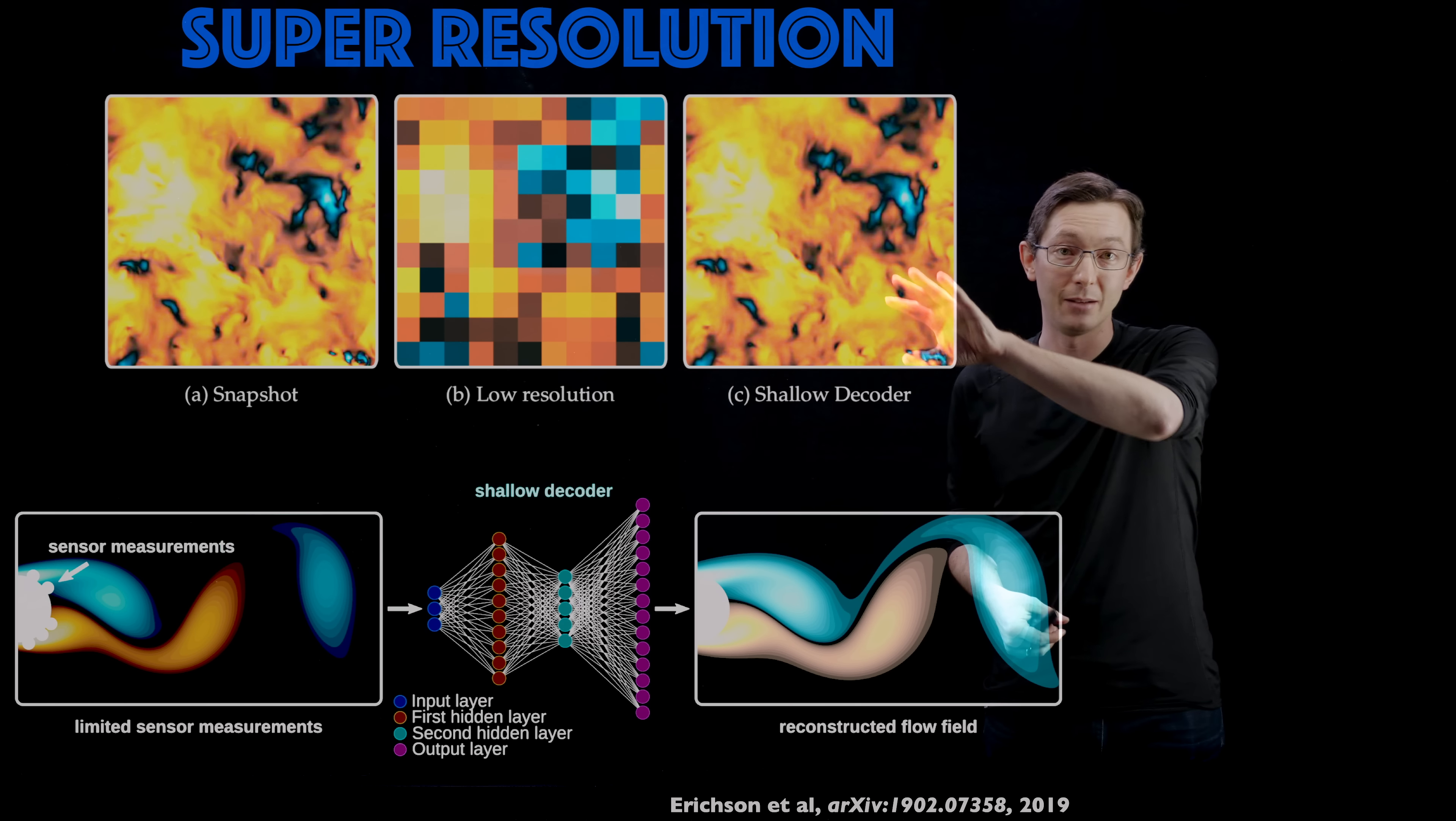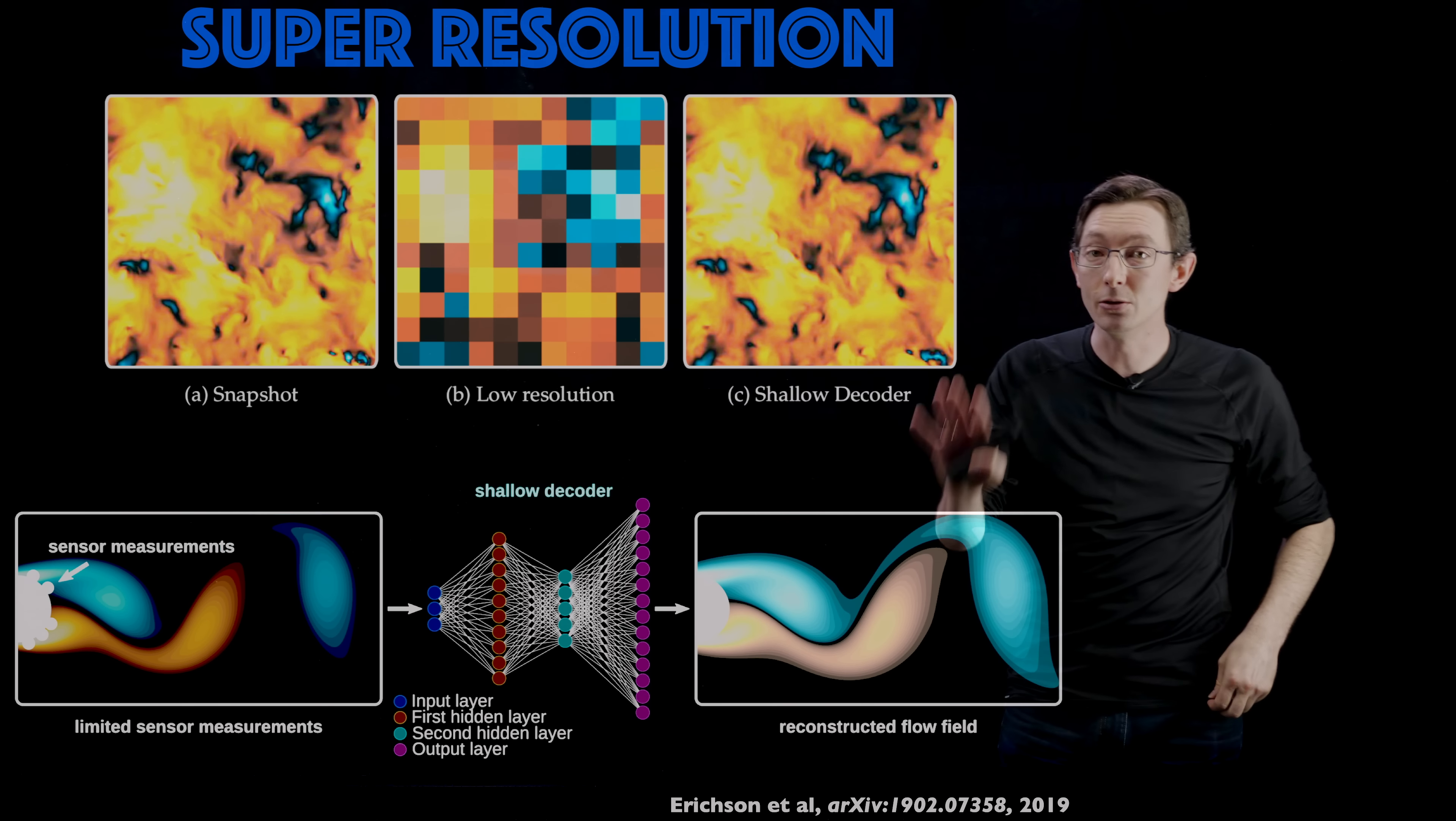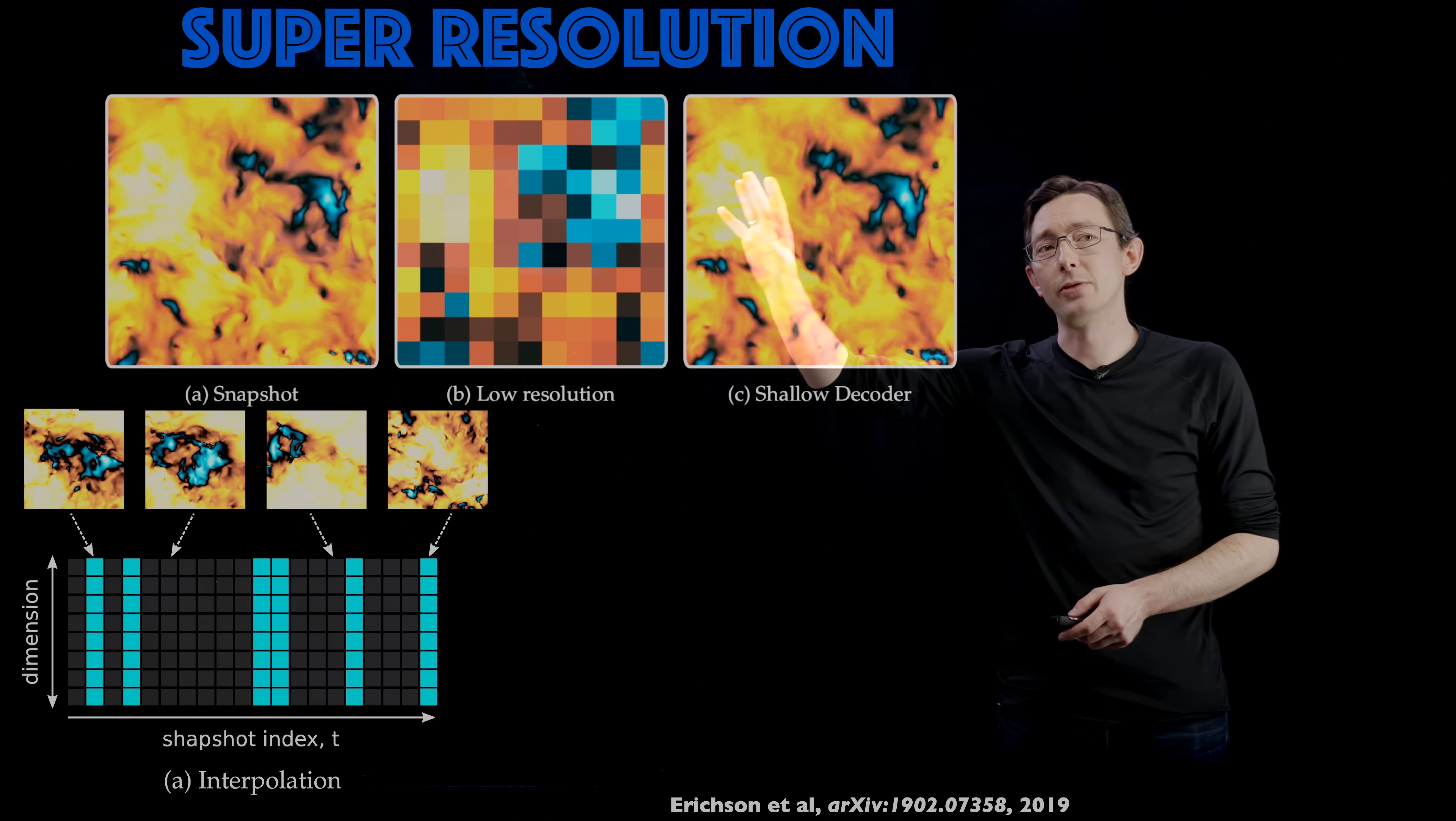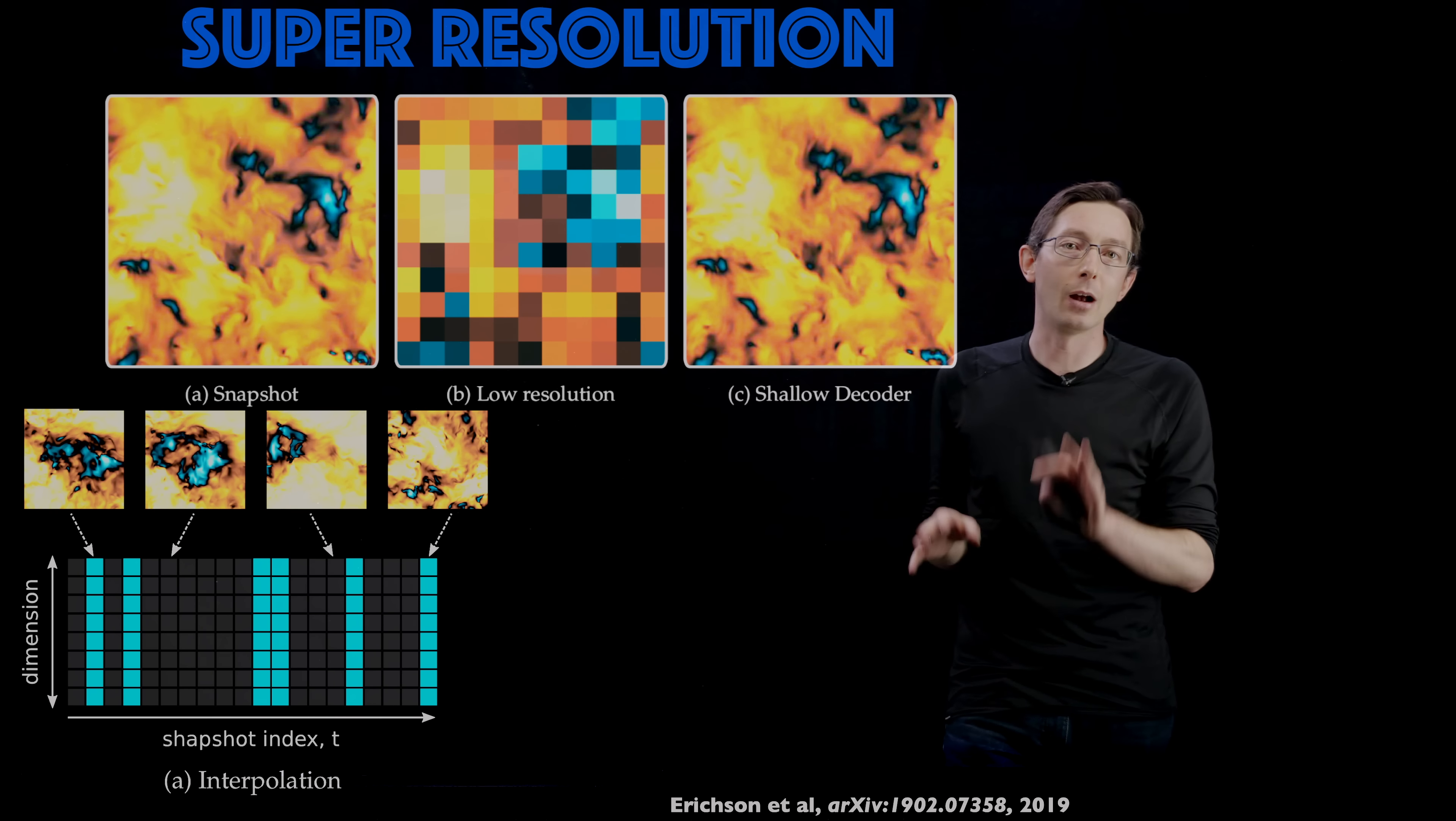This data is from the Johns Hopkins turbulence database, a fantastic resource where you can download tons and tons of high fidelity data from fluid simulations, a variety of fluid simulations. Huge service to the field is the Johns Hopkins turbulence data set. What Ben showed was that you can get this really nice super resolution reconstruction of your image even from this very low resolution downsampled image.